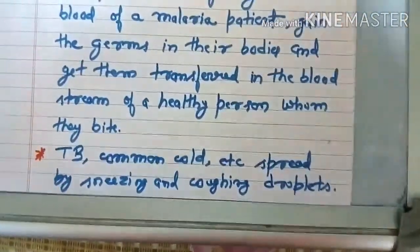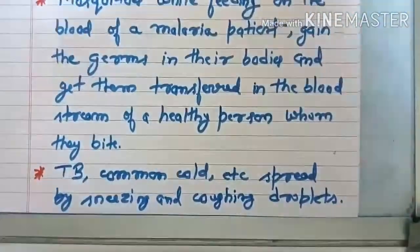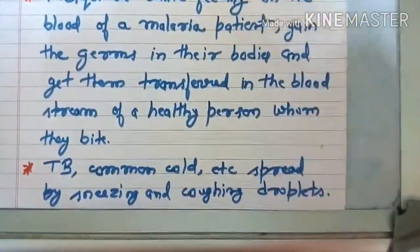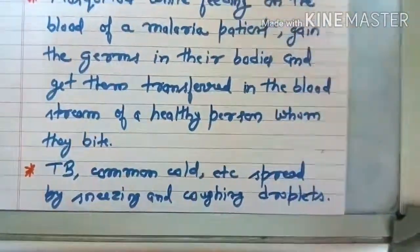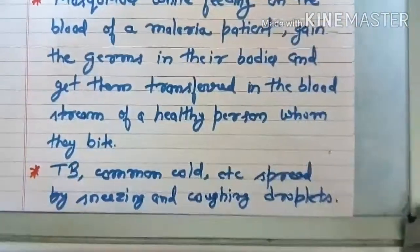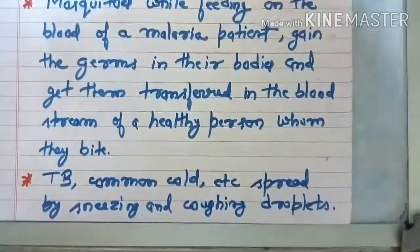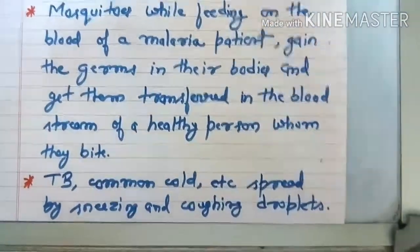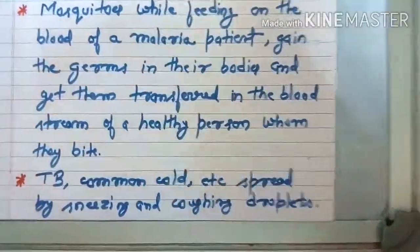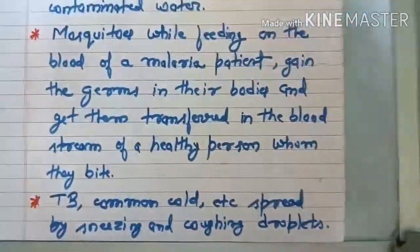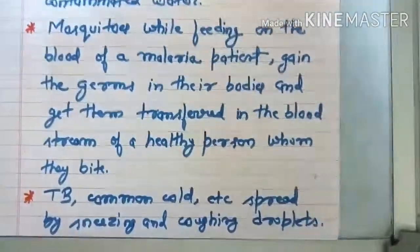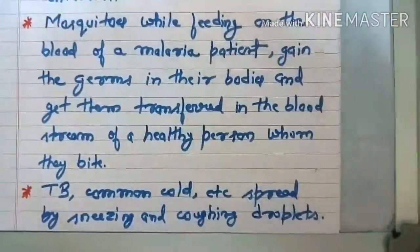TB and common cold are spread by sneezing and coughing droplets. There are some diseases like TB and common cold where sneezing and coughing are the symptoms, and through those droplets the disease spreads. Similarly, coronavirus is also a communicable disease that spreads this way.